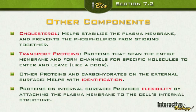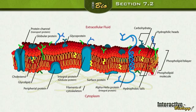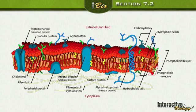We also have proteins on the internal surface that provide flexibility by attaching the plasma membrane to the cell's internal structure. Looking at the plasma membrane in a diagram: here's the extracellular fluid — outside the cell — and intracellular is inside. Here is the plasma membrane, and inside we have the cytoplasm. We can see a transport protein through which stuff can pass.